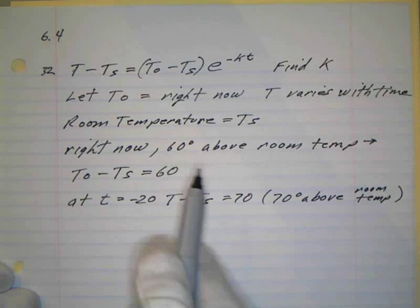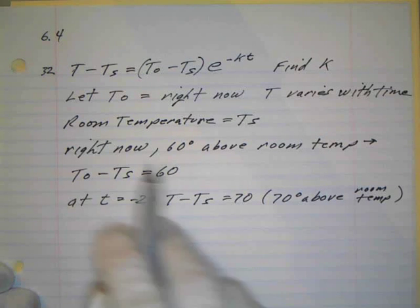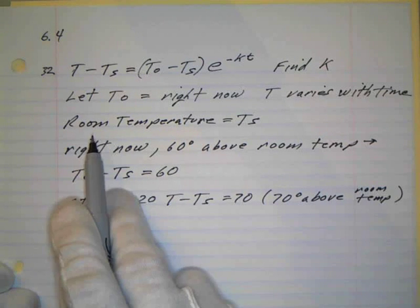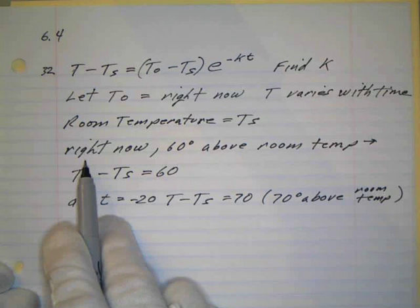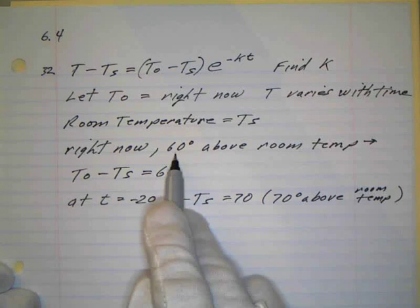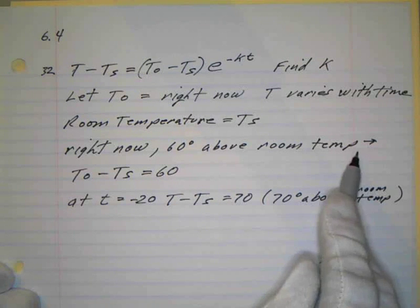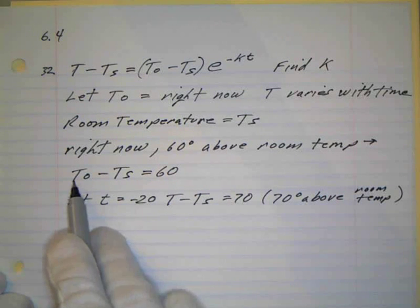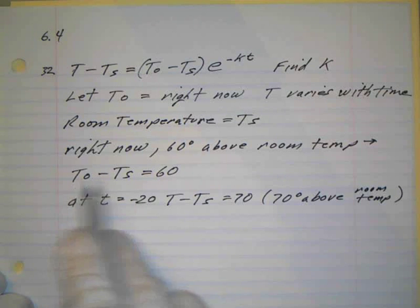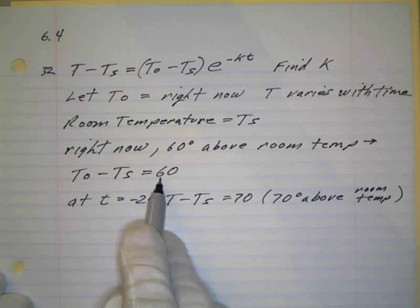Okay, and little t will be time. And what we have is the room temperature. It says right now, so this is right now, we're 60 degrees above room temperature. What that really means is that T_0 right now minus the room temperature, since it's above the room temperature, will be 60 degrees. That's the difference.